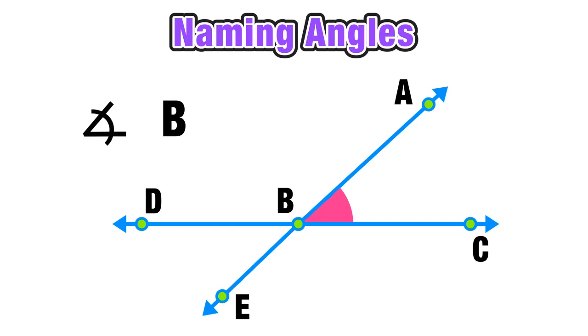So now to name this angle we have to use all three letters. B stays in the middle since that's the vertex and we can call this angle ABC. Now we can also notice that we can go in the reverse direction and see that CBA is another way of containing that angle. So we can reverse those letters and call this angle CBA. Either way is fine. The important thing is that your vertex is in the middle in this case point B.